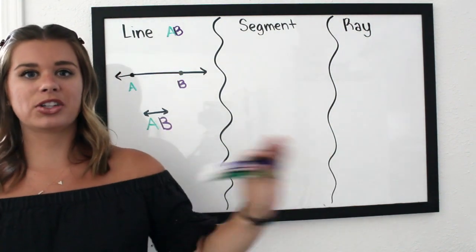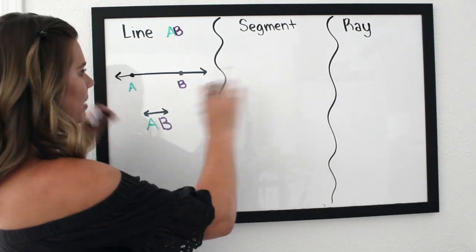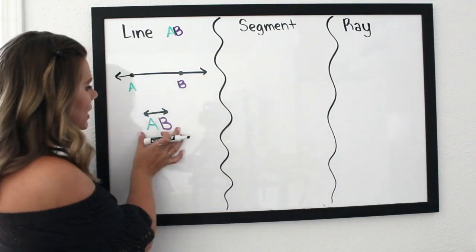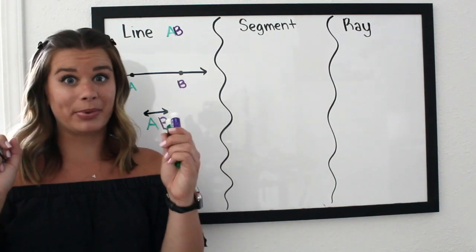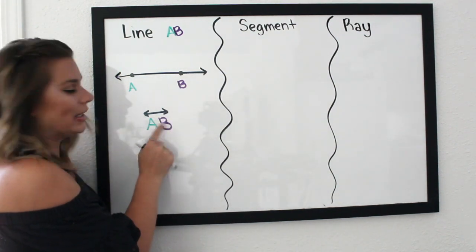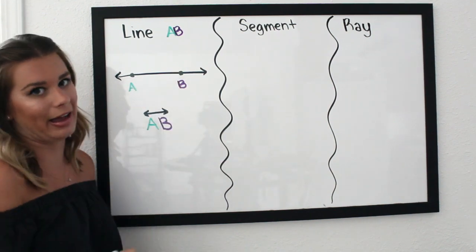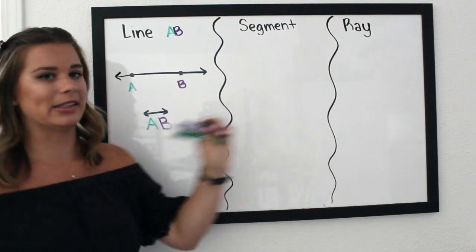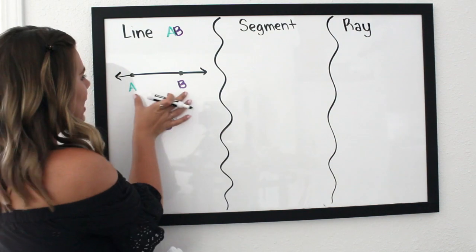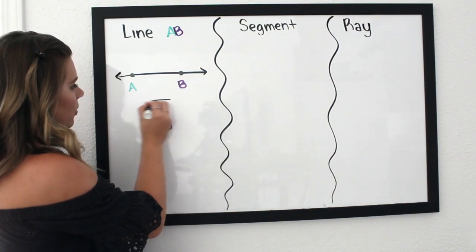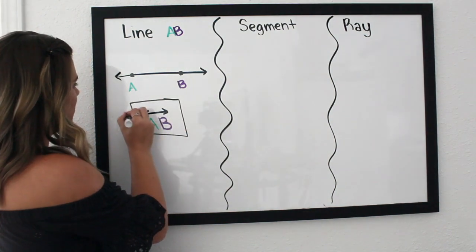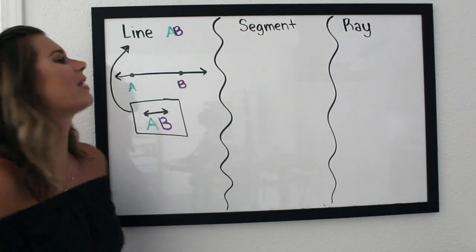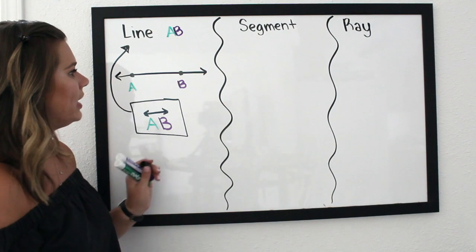The arrows matter because by definition a line goes off beyond the endpoints infinitely — it keeps going past the whiteboard through both ends. You need to tell your reader it's not a segment, it doesn't stop; it keeps going past those two points. Points A and B are on that line, and it goes on forever infinitely in both directions. This notation reads as 'line AB.'